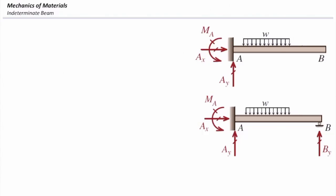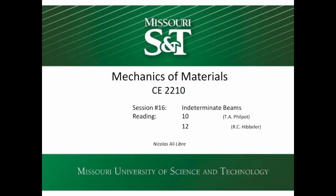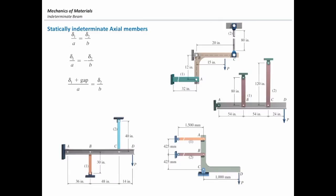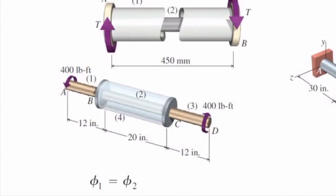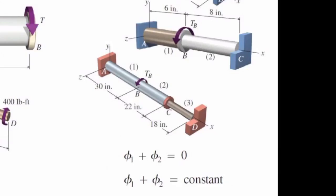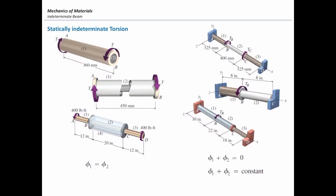This concept is the one that we previously used for axially loaded elements. The same is true for torsional elements. We have two categories. In the left one, phi1 is equal to phi2. In the right one, phi1 plus phi2 is equal to zero or held constant if there is any gap. So again, we are getting that extra equation from compatibility.